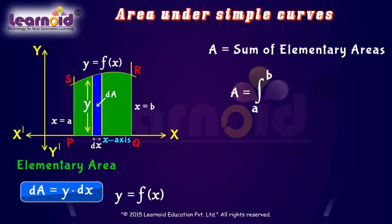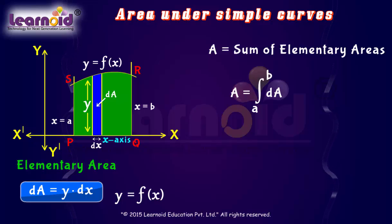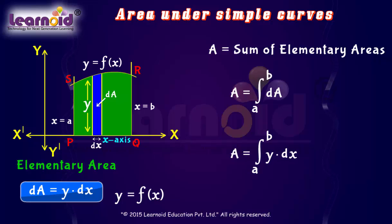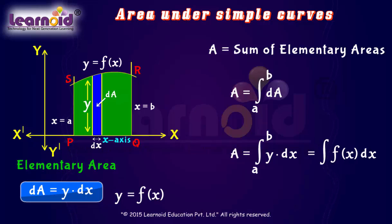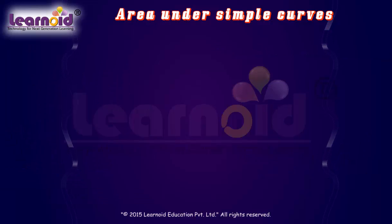This area is called the elementary area, located at an arbitrary position. The total area A of the region between y = f(x), the ordinates x = a, x = b, and the x-axis is the sum of such elementary areas of thin strips from x = a to x = b. So A is equal to the definite integral of f(x)dx from x = a to x = b.